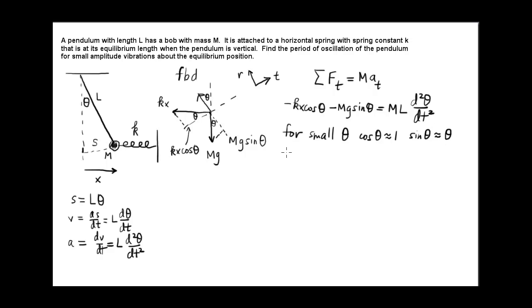If we make those substitutions, now we have an approximate equation: -kx - mg theta equals ml d squared theta dt squared. And one more thing we can do is we also can see that the x, the horizontal displacement of the bob, is about the same as s for very small oscillations. So we can also say that x is approximately s, which is equal to l times theta. So let's make that substitution: minus kl theta minus mg theta equals the right-hand side, ml d squared theta dt squared.